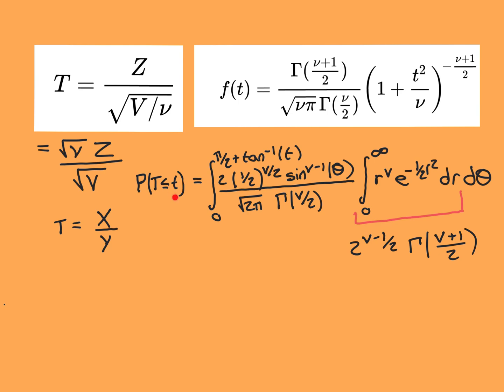We've got that the CDF for this is given by this integral. We've just worked out that this bit here — the integral from 0 to infinity of r to the power of ν · e to the negative one-half r-squared dr — is given by 2 to the power of (ν−1)/2 times Γ((ν+1)/2). So what we're now going to do is replace that in this formula and do some cancellations. This 2 to the power of ν/2 cancels with this (1/2) to the power of ν/2.